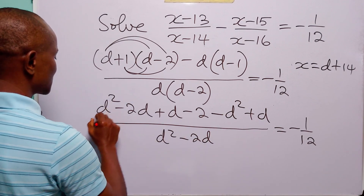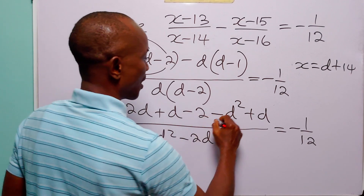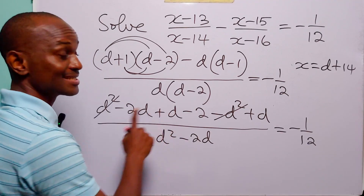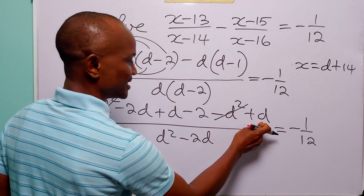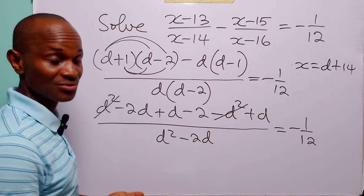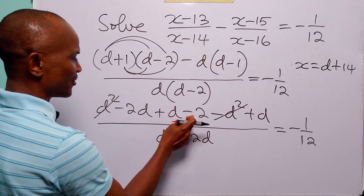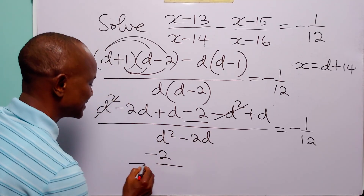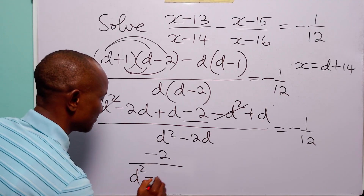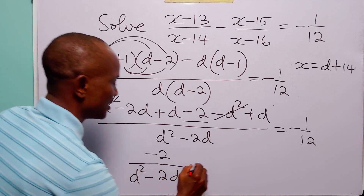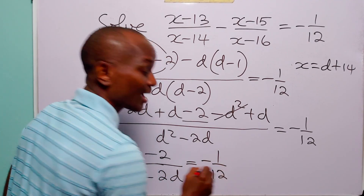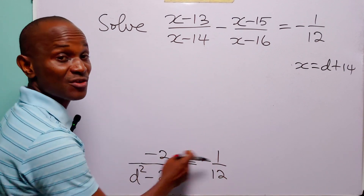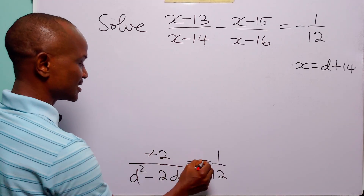Let us further simplify. d squared minus d squared equals 0. Minus 2d plus d is minus d, and minus d plus d is 0. So in the numerator we are left with minus 2, and in the denominator we have d squared minus 2d, and this is still equal to minus 1 over 12.